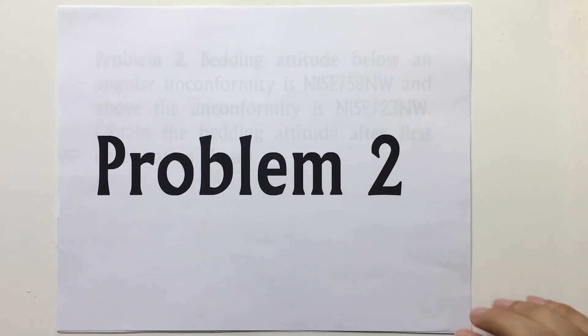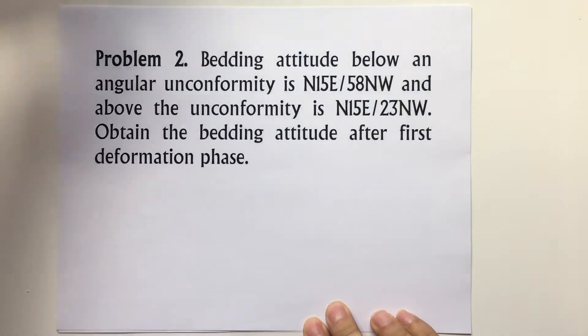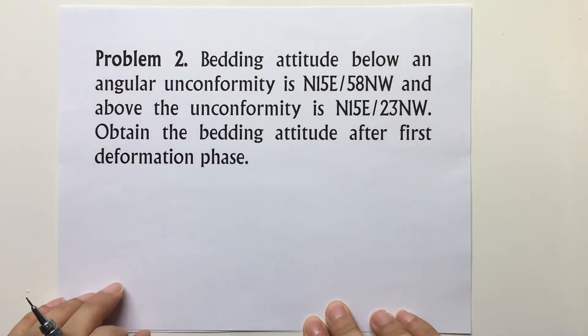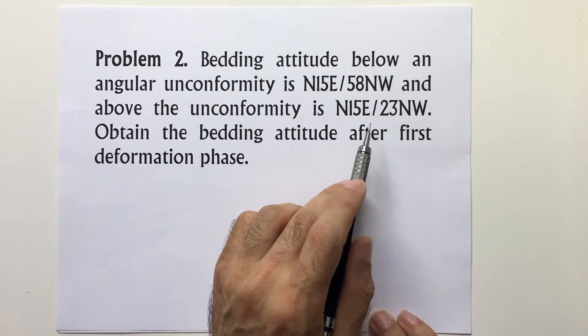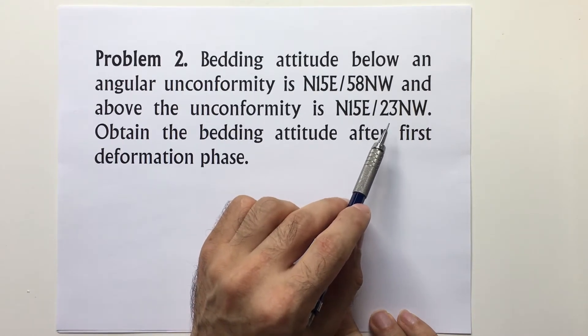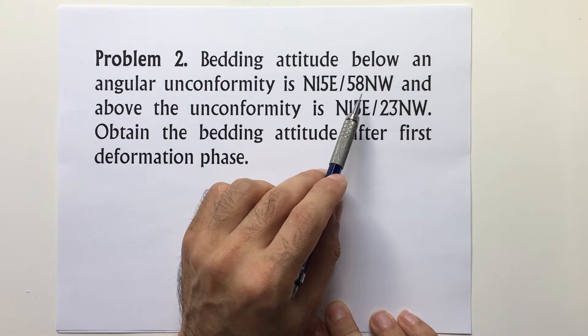Let's look at Problem 2. The problem states that bedding attitude below an angular unconformity is N15E/58NW, and above the unconformity is N15E/23NW. The dip of the bedding is different, which means we had one tectonic phase.